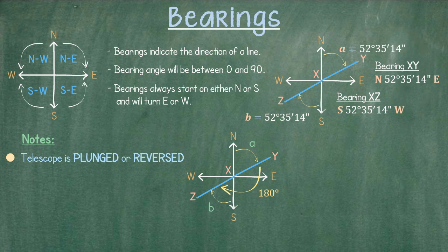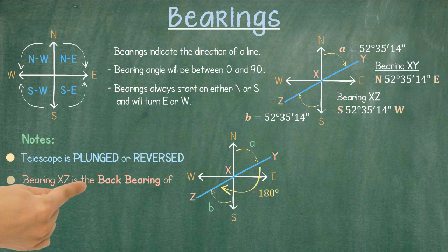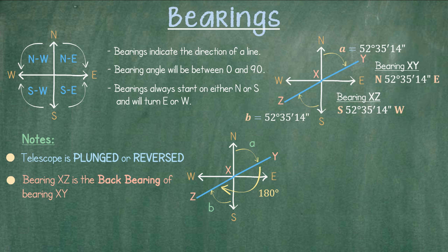Another term used in surveying is back bearing. Bearing XZ is the back bearing of bearing XY, meaning that bearing XZ is in the opposite direction of the original bearing.